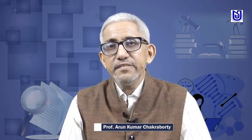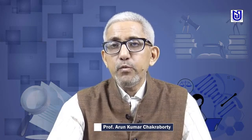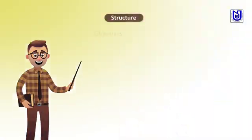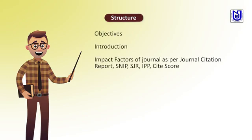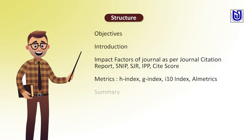Today we will discuss research and publication ethics. We have given this structure: what is the objective, what is the introduction, impact factors of journals as per Journal Citation Report, SNIP, SJR, IPP, CiteScore, then metrics of H-Index, G-Index, I-10-Index and Altmetrics, and then the summary.